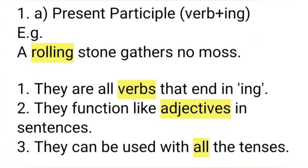Let's study present participles: verb plus -ing, or the -ing form. See the example: 'A rolling stone gathers no moss.' In this sentence, 'rolling' describes 'stone.' We can use words like round, smooth, and so on to describe a stone — these are all adjectives. Hence, we can see that 'rolling' functions like an adjective in this sentence. It's in the form of verb plus -ing: roll-ing.